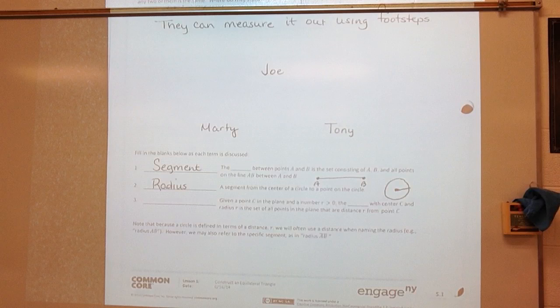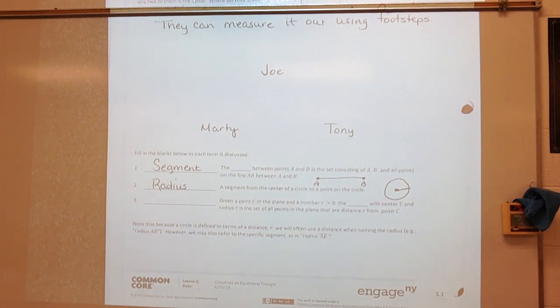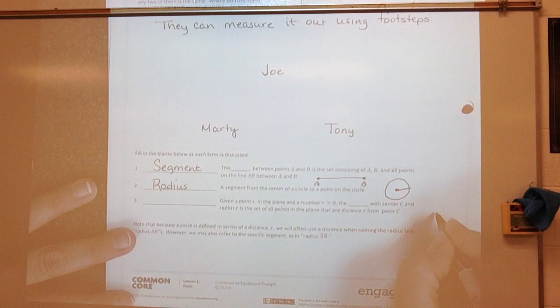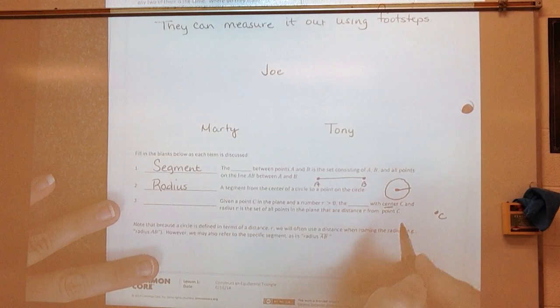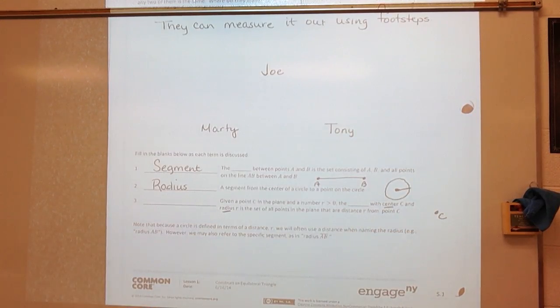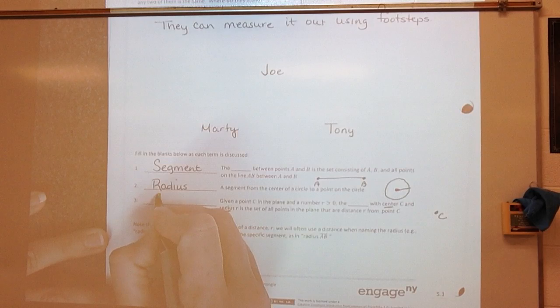All right, given a point C in the plane and a number R is greater than zero, the blank with center C and radius R is the set of all points in the plane that are distant R from point C. All right, so I've got point C here, and I've got a number that's greater than zero. So the blank with center C, that should be a key, center C and radius R. What do we know, what figure do we know that has a center and a radius? That would be a circle.